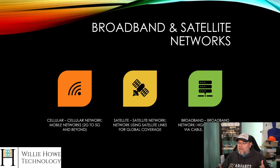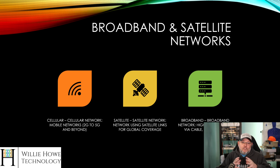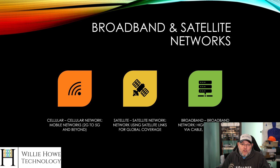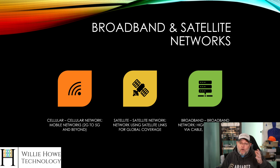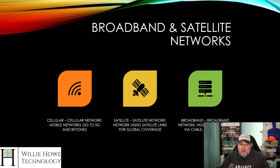Then we have satellite networks. A satellite network is going to give us much larger global coverage, larger geographical coverage. You know that Starlink and HughesNet are out there. There are also private networks deployed based on satellites, such as for governments and private companies. And then we have broadband networks, which could be DSL, cable internet, fiber.